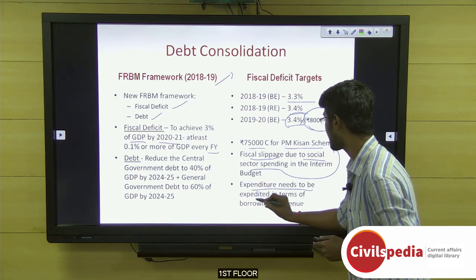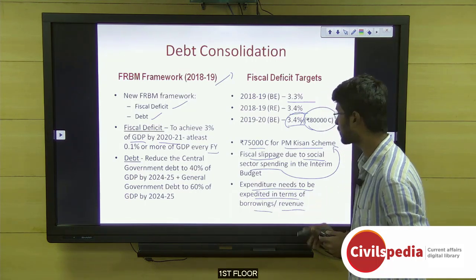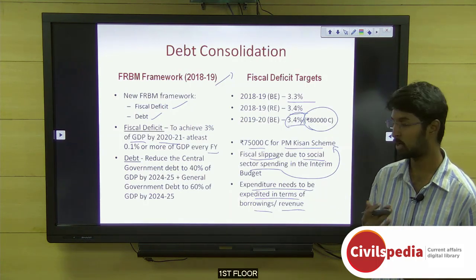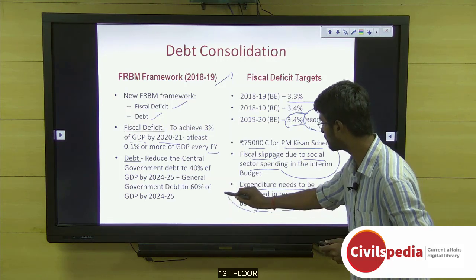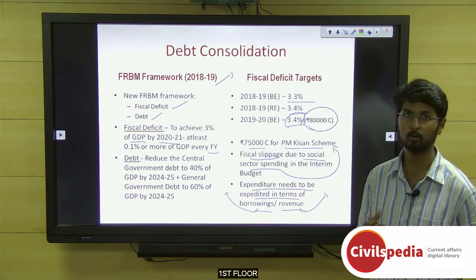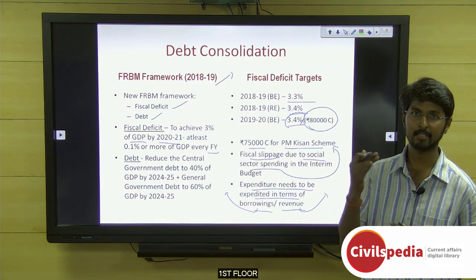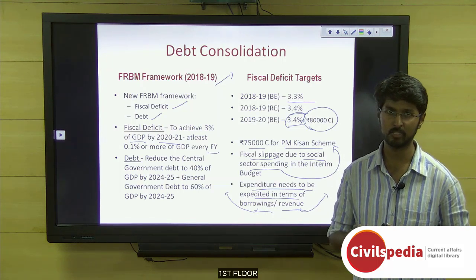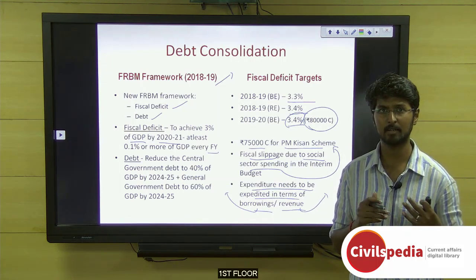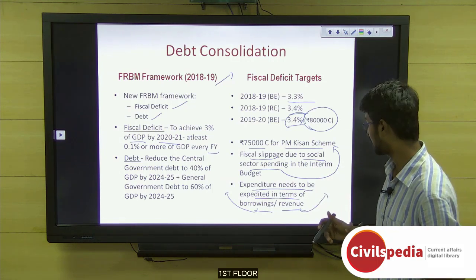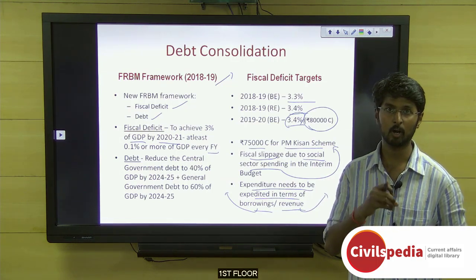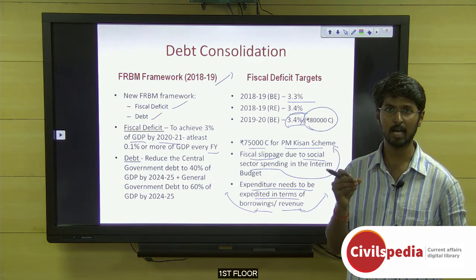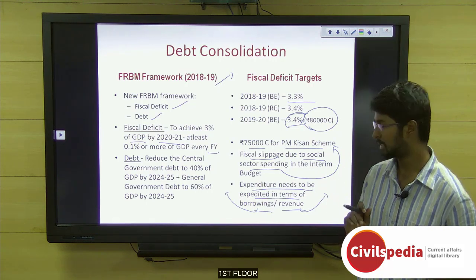The government can fund expenditure only by either borrowing money or generating more revenue. Revenue can be tax revenue or non-tax revenue. There was a structural reform 2-3 years ago in the form of GST, increasing tax revenue year on year. For non-tax revenue, the government largely targets disinvestments, but those targets have not been properly met in recent years.